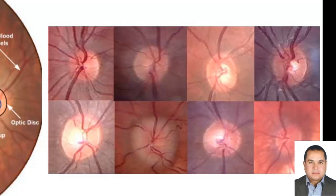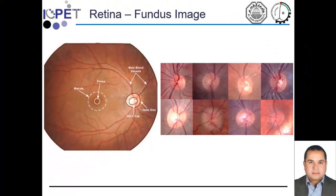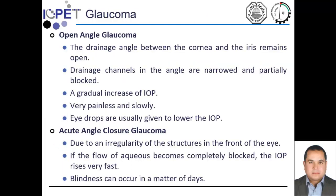Mainly, it is subject to the opinion of the doctors, so we will solve this problem by automating the detection of the optic cup and optic disc areas. We mentioned two types of glaucoma. We will not discuss these two types, but we will talk about the main common features: the sudden severe pain that happens for the patient, blindness that can occur in a matter of days, and no symptoms in early stages.